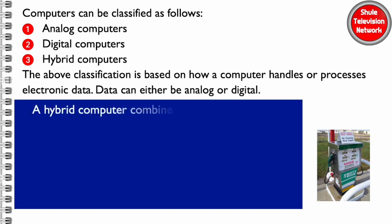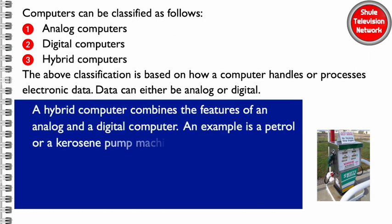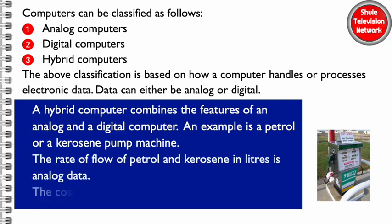A hybrid computer combines the features of an analog and a digital computer. An example is a petrol or a kerosene pump machine. The rate of flow of petrol and kerosene in liters is analog data. The cost of fuel is displayed as digital data.